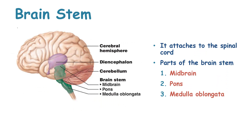The next part of the brain is the brain stem. The brain stem attaches to the spinal cord and is formed of three main parts: the midbrain, the pons, and the medulla oblongata.